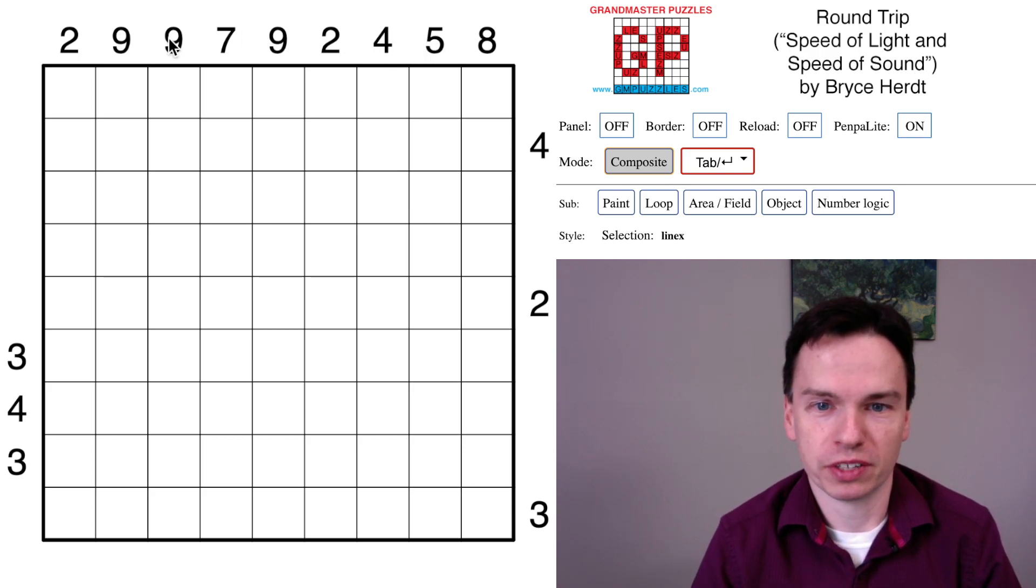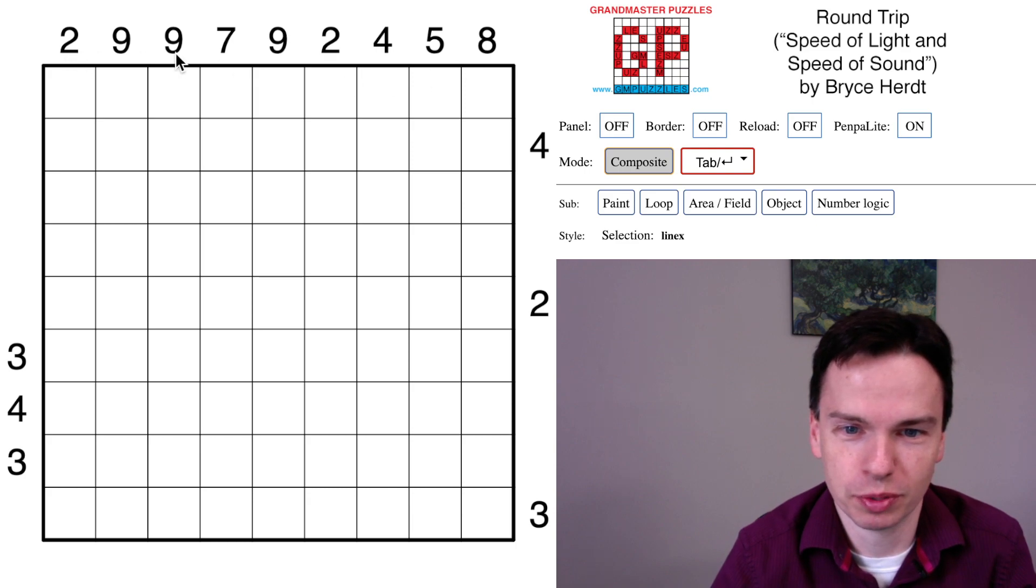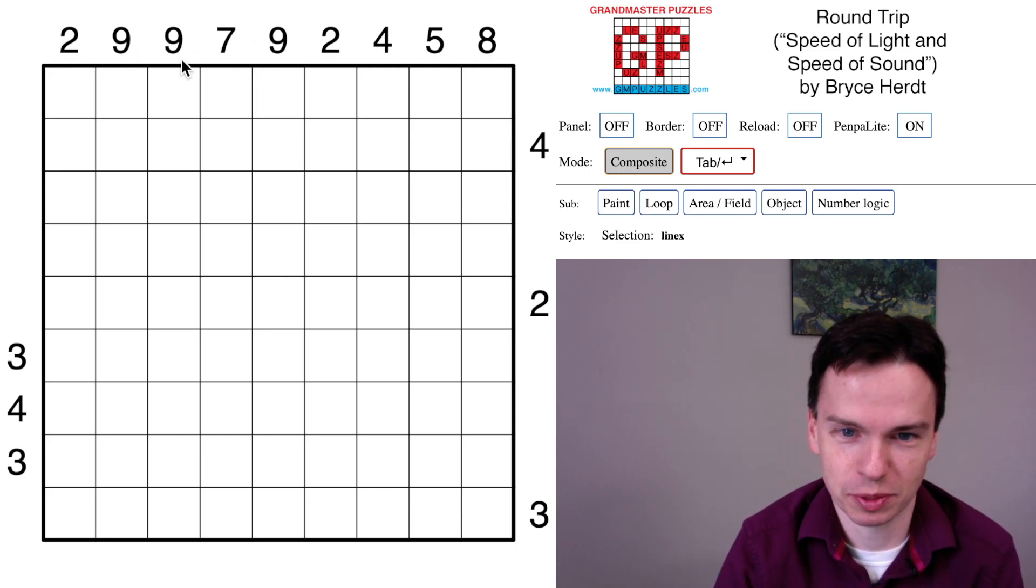We're here to solve this Round Trip by Bryce Hurt called Speed of Light and Speed of Sound. I'm always amazed with the themes people pick out from natural constants, using the full precision of 299792458, which in meters per second is the speed of light in a vacuum.